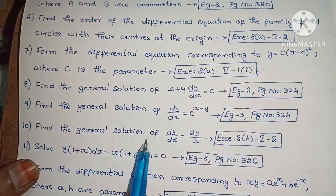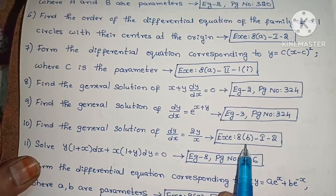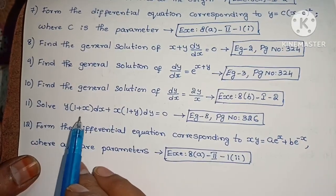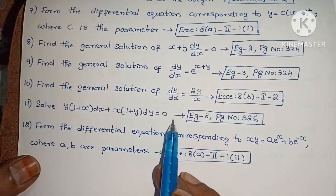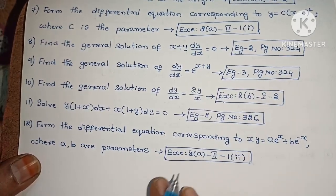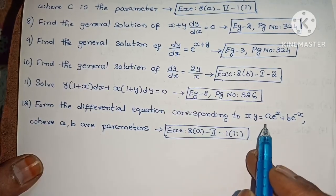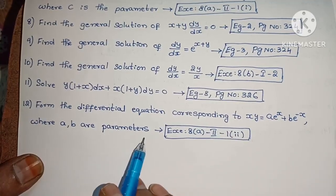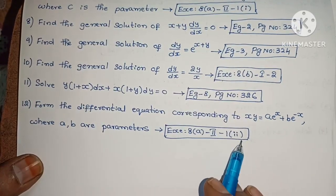Next, find the general solution of dy/dx equals 2y/x. Next, solve y·(1 plus x)·dx plus x·(1 plus y)·dy equals 0. Example 8, page number 326. Next, form the differential equation corresponding to xy equals a·eˣ plus b·e^(−x), where a and b are parameters.